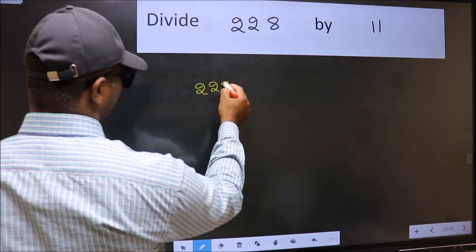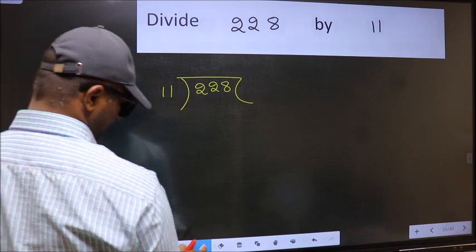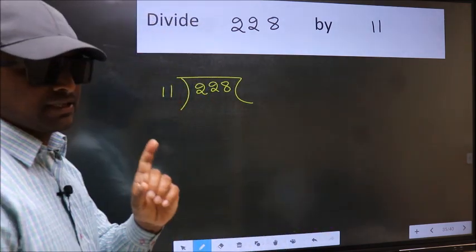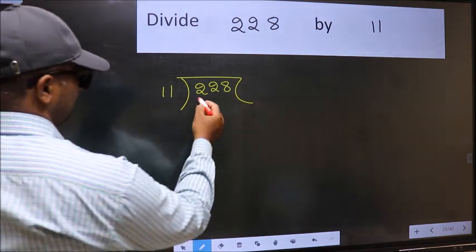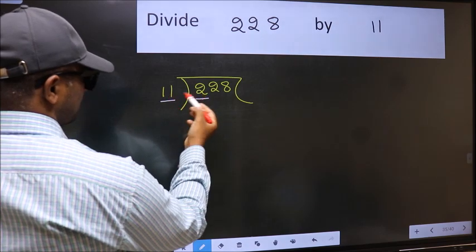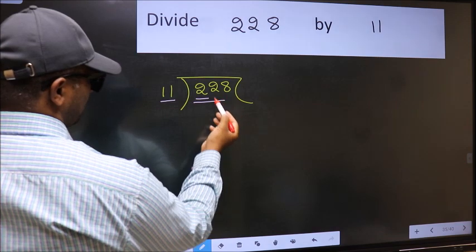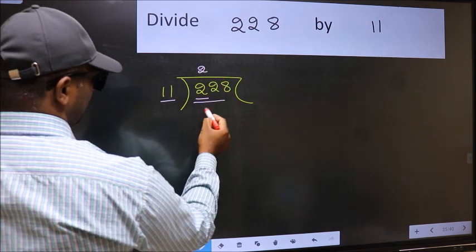228 and 11 here. This is your step 1. Next. Here we have 2 and here 11. 2 is smaller than 11. So take 2 numbers, 22. When do we get 22 in 11 table? 11 times 2 is 22.